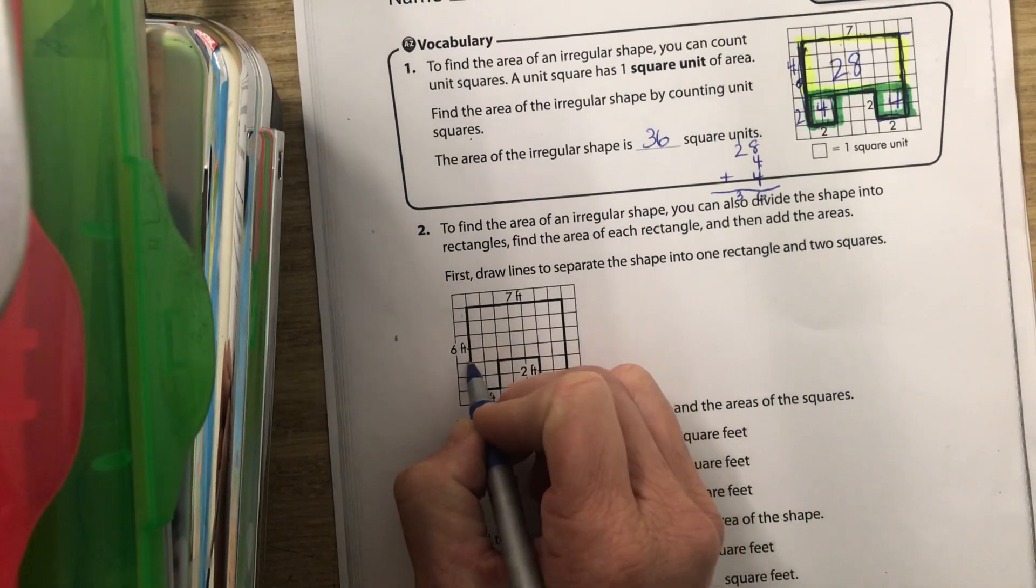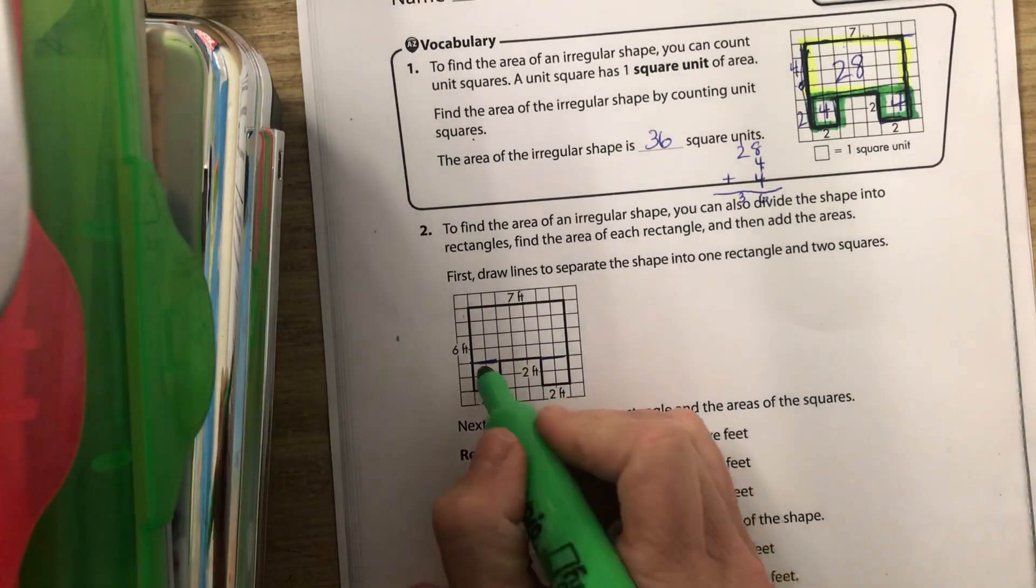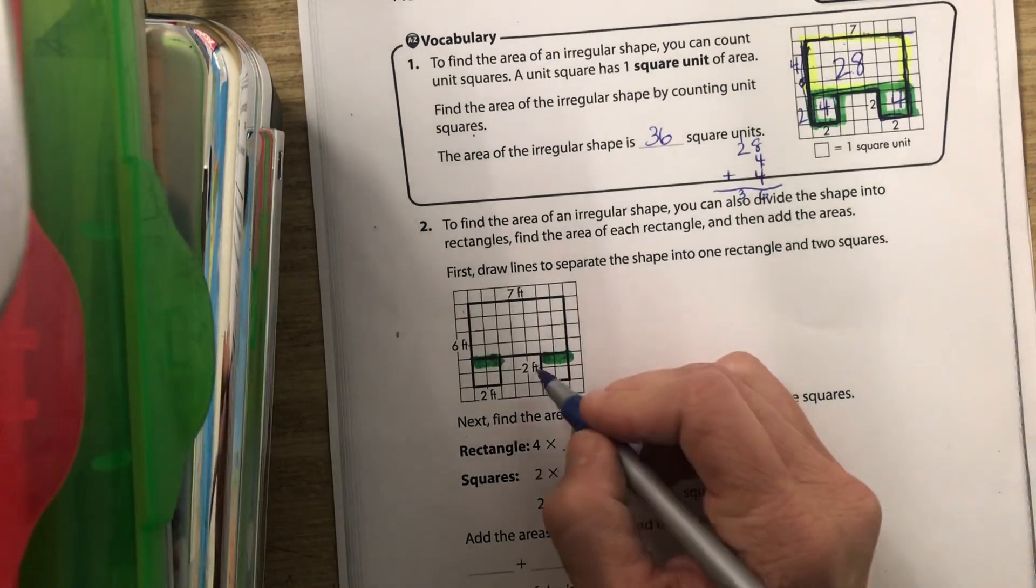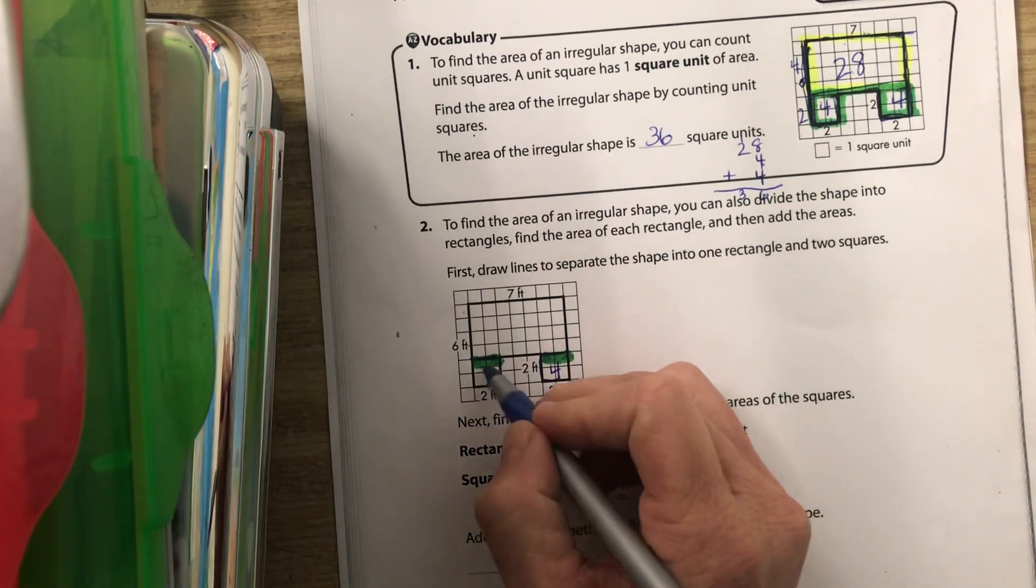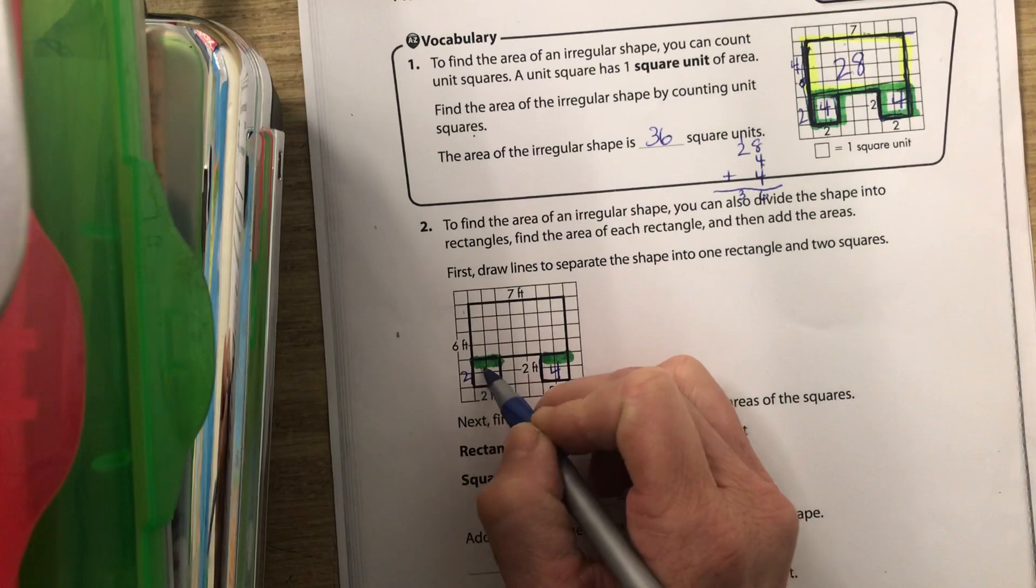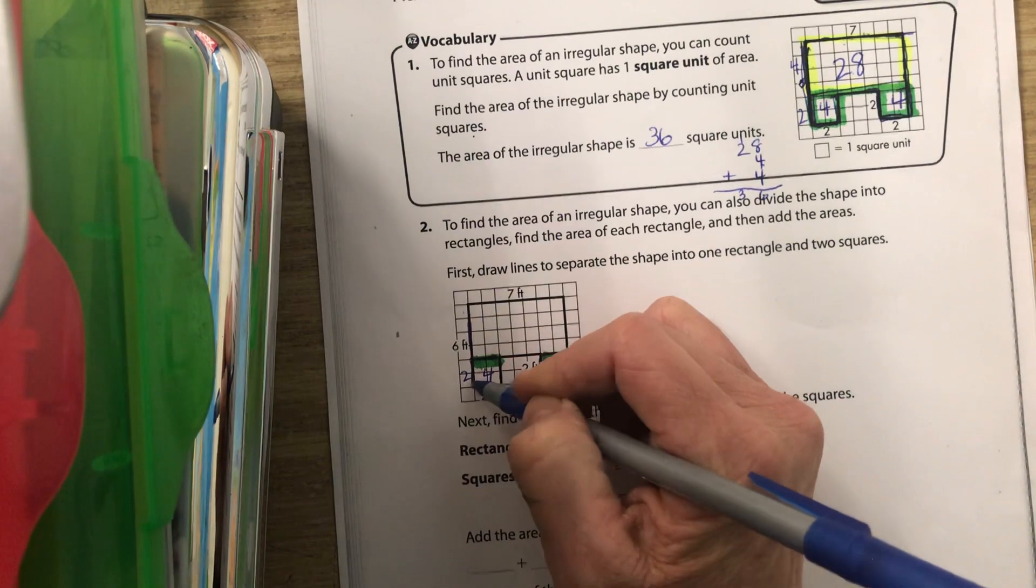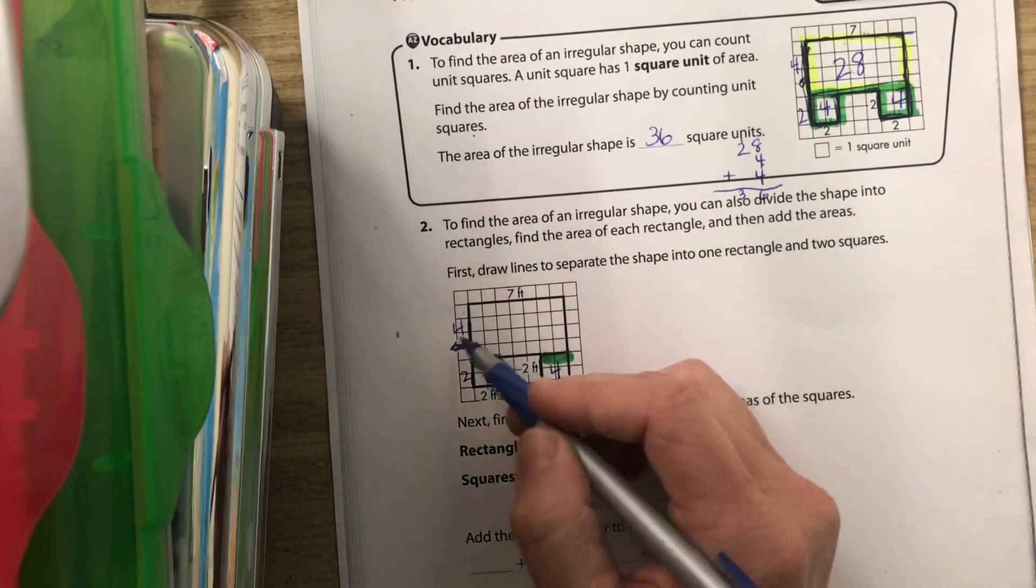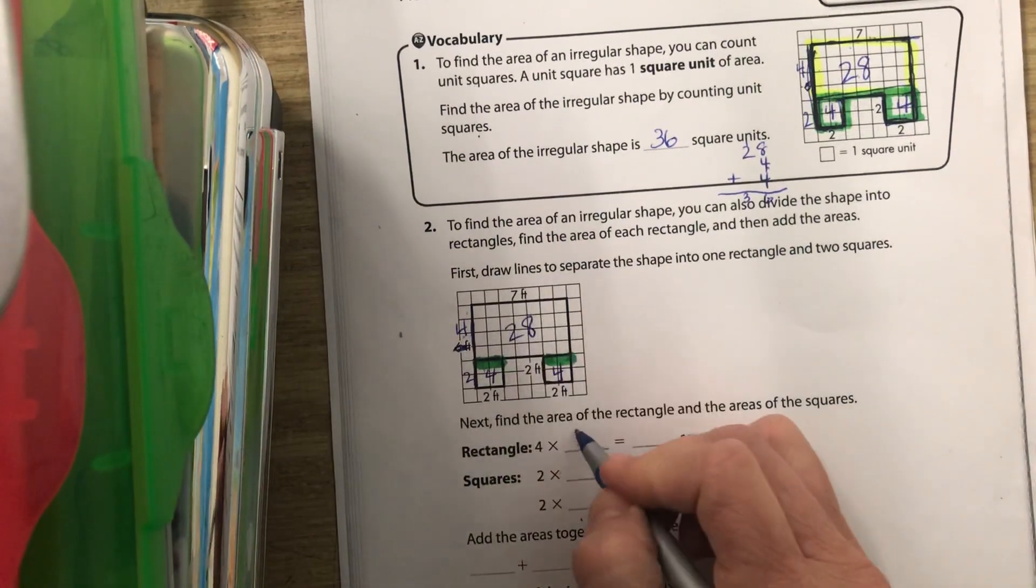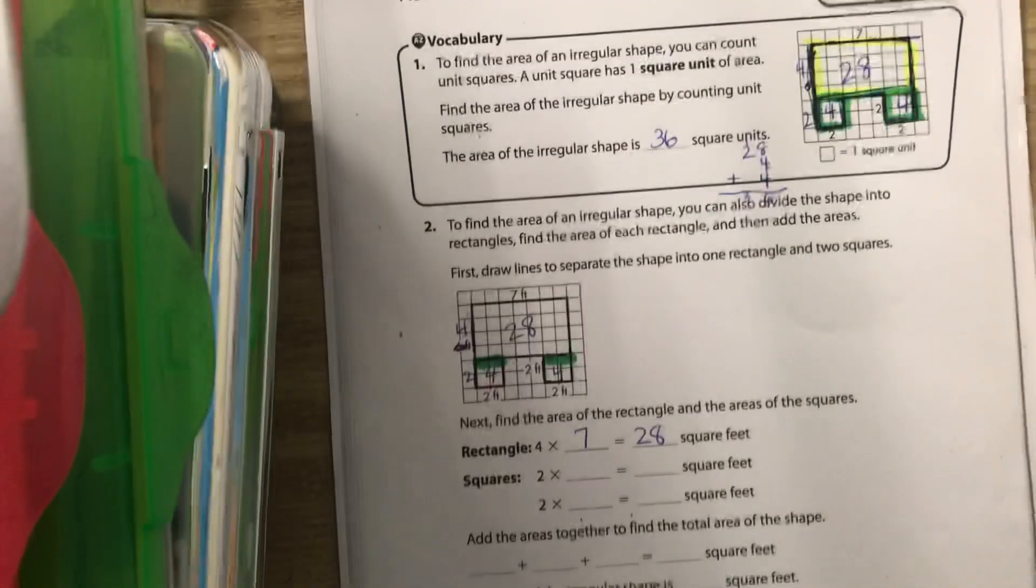You should have drawn a line right here and drawn a line right here. If this is two times two, that's four. If this line is two, then this line is two, and this line is two. If this whole line here is six and this is two of it, then that means this is four. So we have four times seven equals 28 feet for this top rectangle up here.